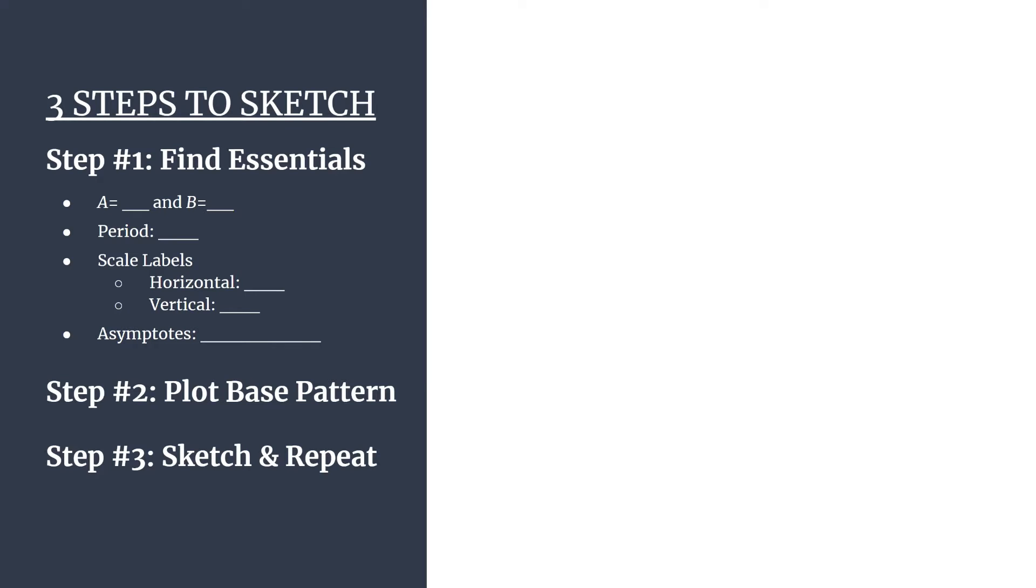So here's our outline, our three steps. We'll first analyze and find all our essential information. It's essentially the get organized step. In step two, we'll plot our base pattern for our first cycle. And in step three, we'll sketch in the graph and repeat for as many cycles as we need.